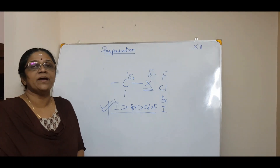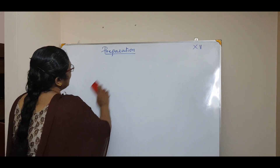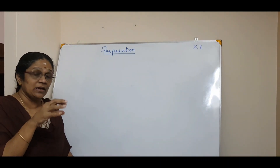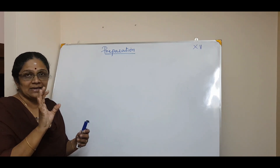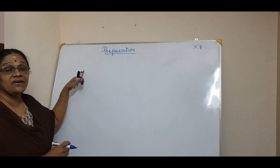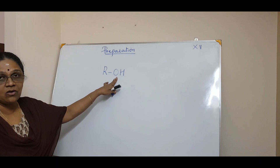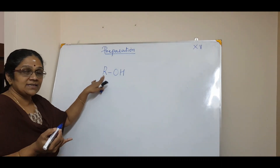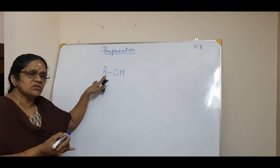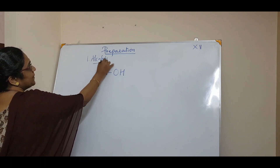Now we move to the preparation of haloalkanes and haloarenes. The first preparation is from alcohols — that is ROH, where R can be any alkyl group such as methyl, ethyl, propyl, or secondary butyl. The OH functional group must be present. The product we want is RX, so the OH must be replaced by X.